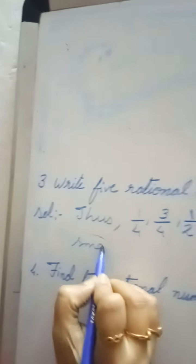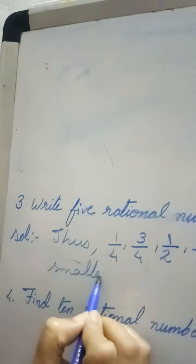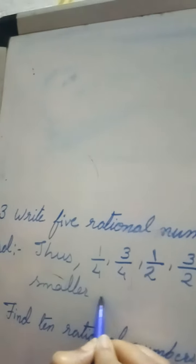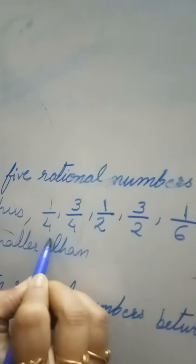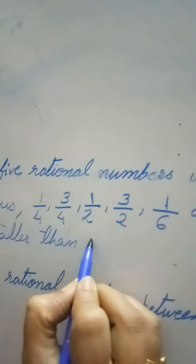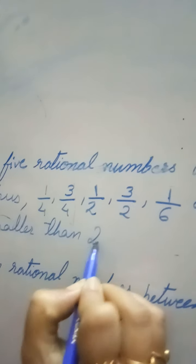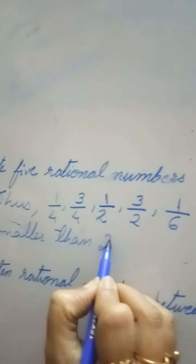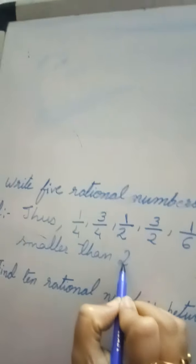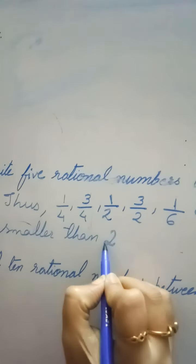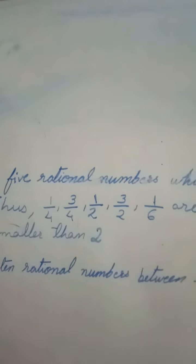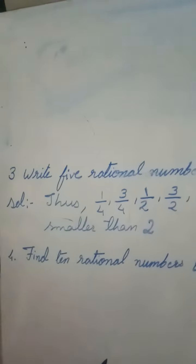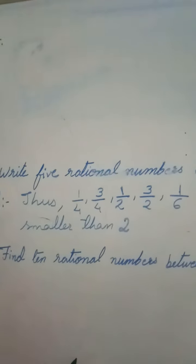These are 5 rational numbers smaller than 2. There are infinite rational numbers which are smaller than 2 — you just have to write any 5.